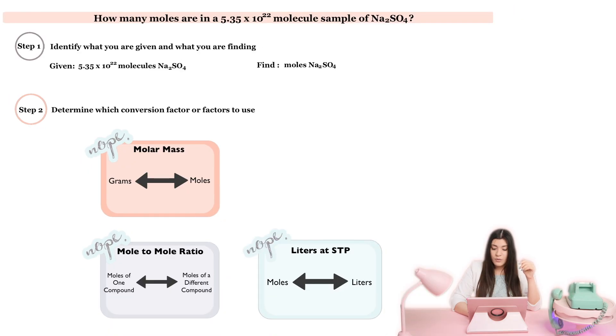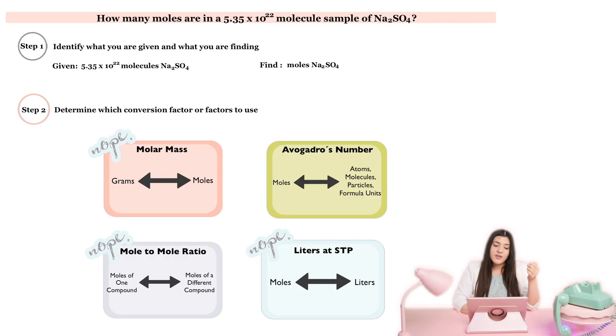So that one's out as well. And then last one that we're going to see is the actual one we will be using. So this is our other conversion factor, Avogadro's number. And Avogadro's number, there's a lot to it. However, what I want you to focus on, because Avogadro's number has atoms, molecules, particles, formula units and all of that, really what this is saying is if you see one of these units, either atoms, molecules, particles or formula units, you will use Avogadro's number.